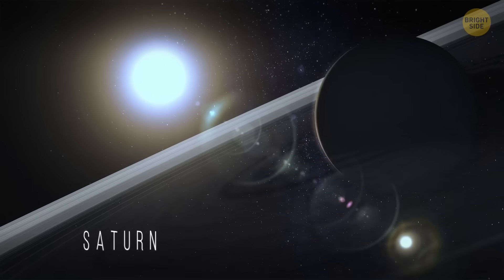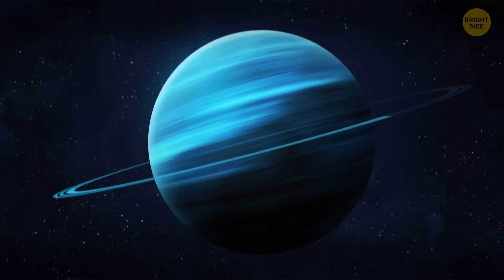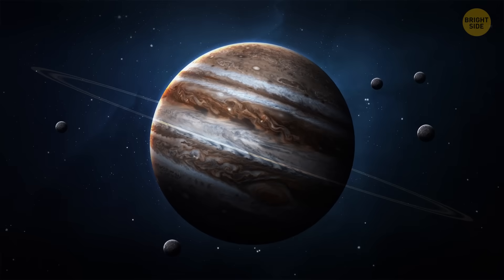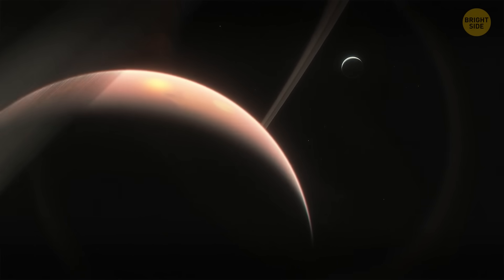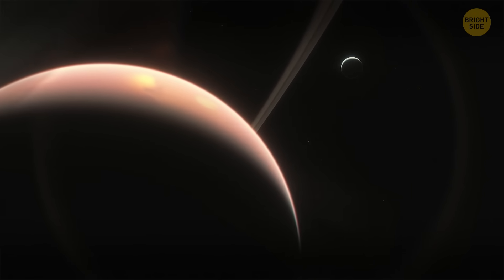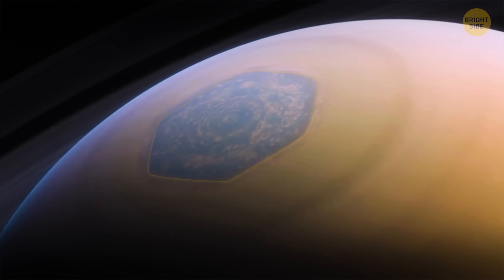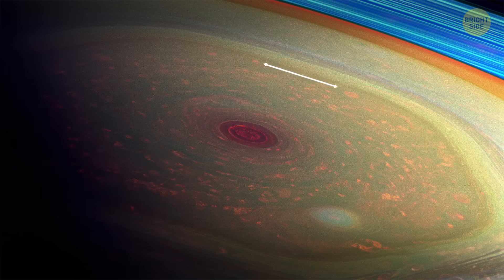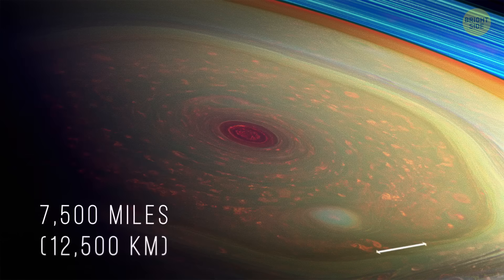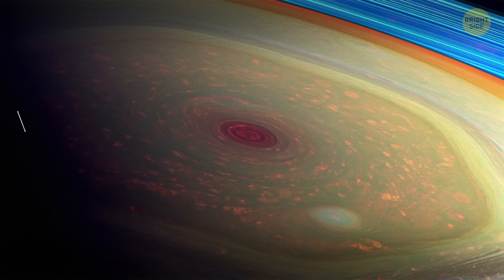Saturn is well known for its famous rings, but Neptune, Uranus, and Jupiter also have rings. At the same time, Saturn has something really special we've never seen on any other planet. It's this huge hexagon storm moving around the planet's north pole. Each of its sides is almost 7,500 miles long. That's an area so great, we could place almost four Earths inside.